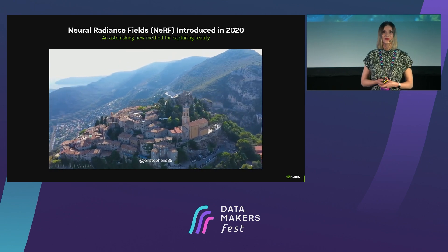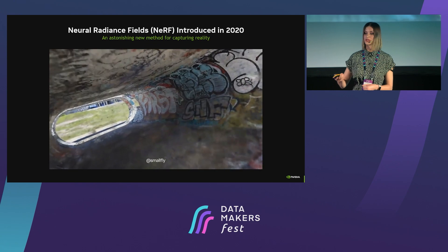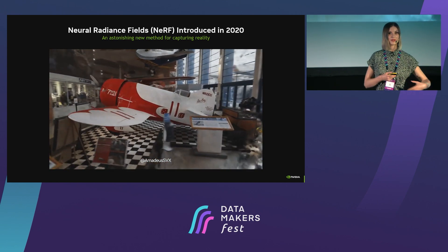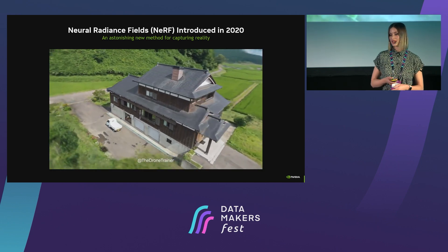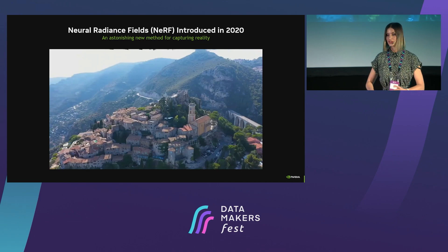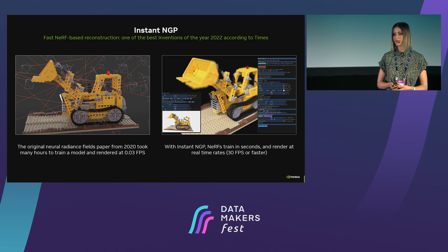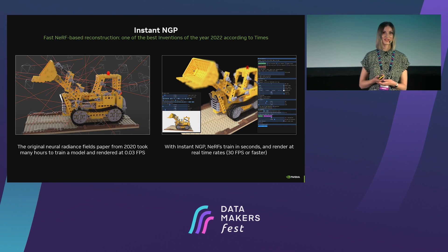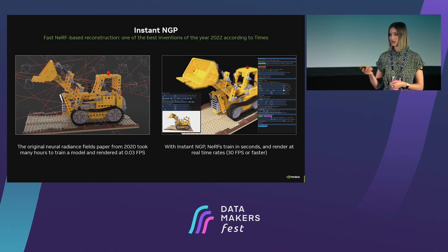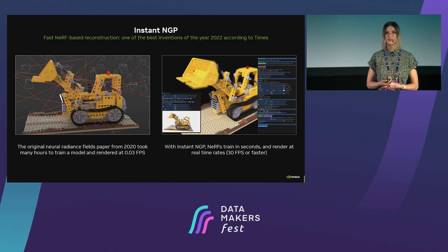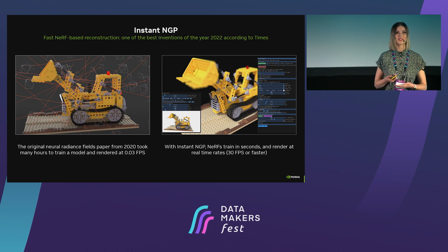Another cool recently introduced technique is called NERF, or neural radiance fields. It works conceptually similarly to structure from motion — you take multiple images of your object from different perspectives — but instead of relying on mathematical techniques like triangulation, you apply deep learning and learn different geometry structures from the sequence of images. NERF was quite slow initially, but colleagues from research introduced a technique called Instant NGP, which is open source and available on GitHub. With Instant NGP, you can achieve rendering at 30 frames per second, already very close to real time. According to Time magazine, this became one of the best inventions of last year.